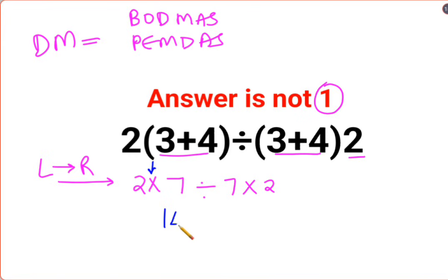So 2 multiplied by 7 is 14 divided by 7 multiplied by 2. 14 divided by 7 is 2 multiplied by 2. So the answer for this question is supposed to be just 4.